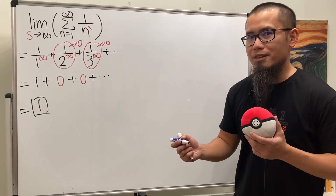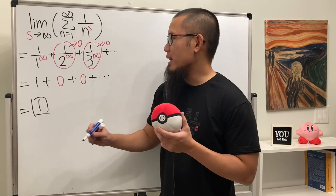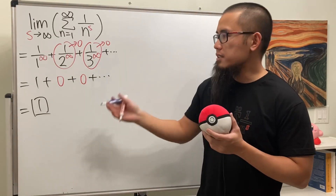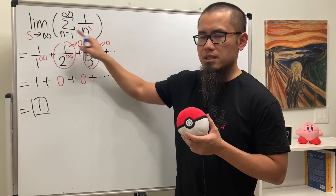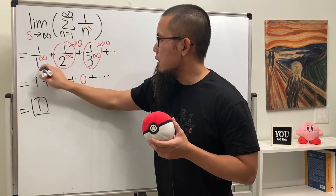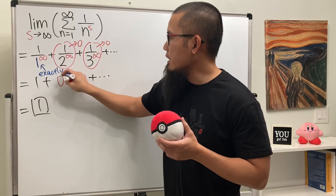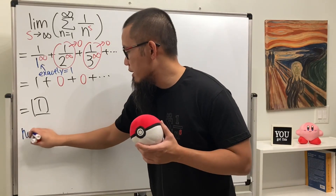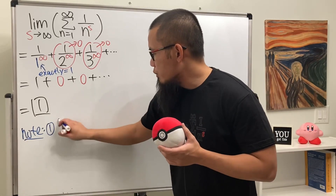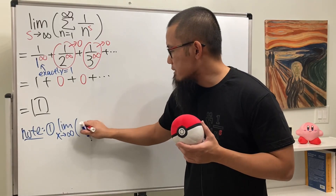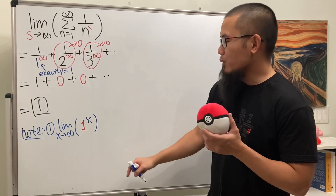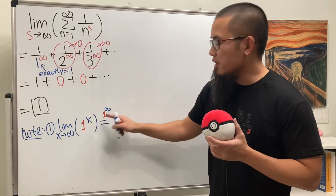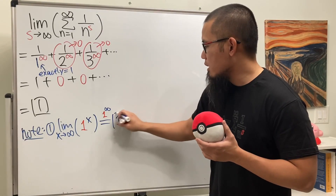I expect some of you will say that 1 to the infinity's power — we cannot draw a conclusion because that's an indeterminate form. However, that's actually not true in this case. Because n is equal to 1 means n is exactly equal to 1. You put a 1 right there for the base. If the base is exactly equal to 1 and you raise that to the infinity's power, you actually just get 1. That's not indeterminate. For example, if you take the limit as x goes to infinity of 1 to the x power, that's a super boring function — you always get 1. So you can draw the conclusion that the answer is just equal to 1. No problem on that.